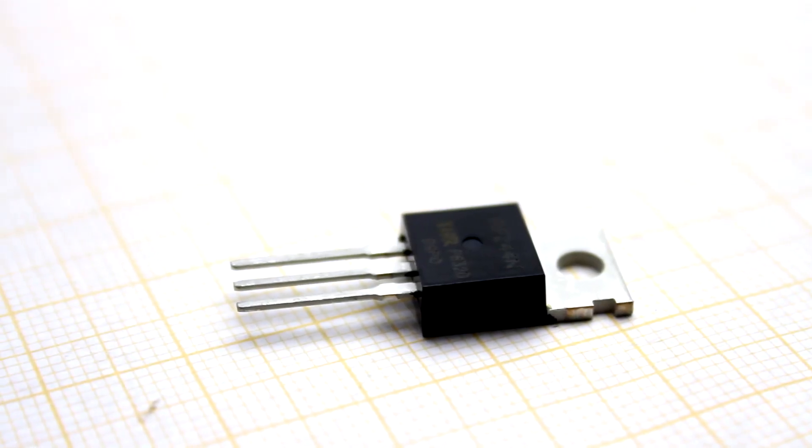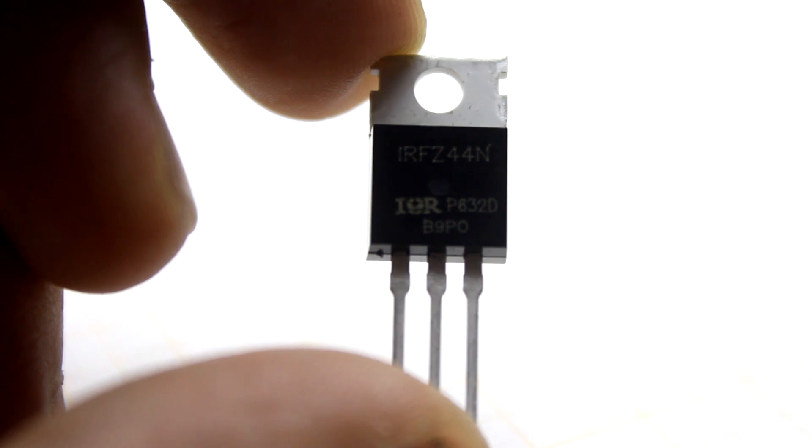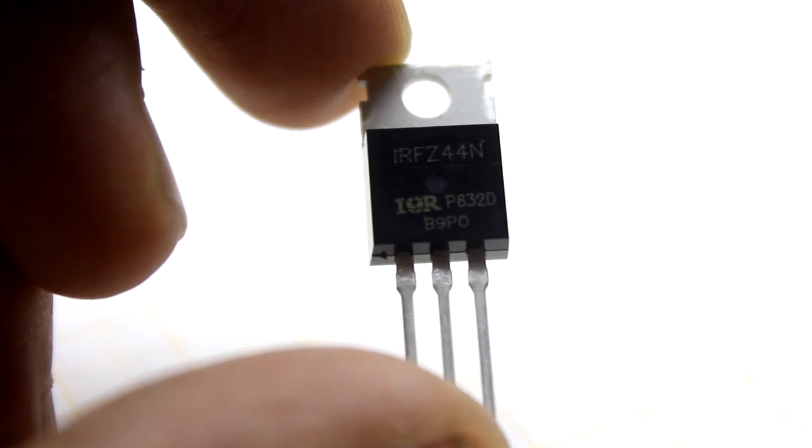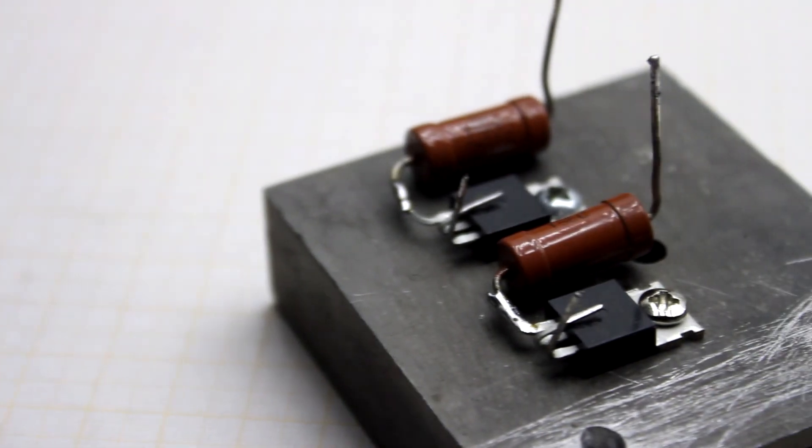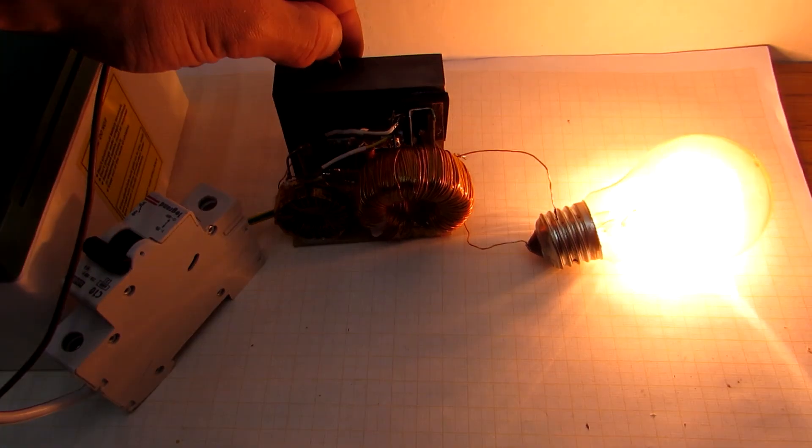I used the cheapest and most up-to-date IRFZ44, but other types can also be used with a current of 30 Amperes and more. Of course, the more the current reserve of the keys, the greater the output power of the inverter as a whole.